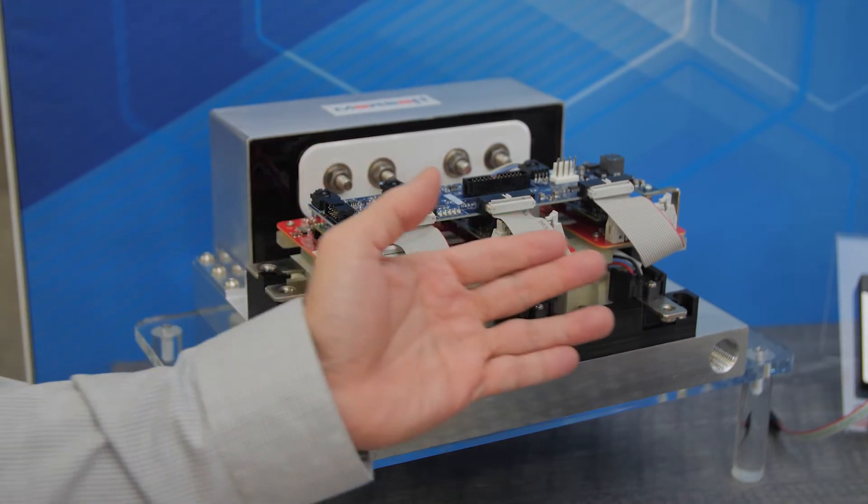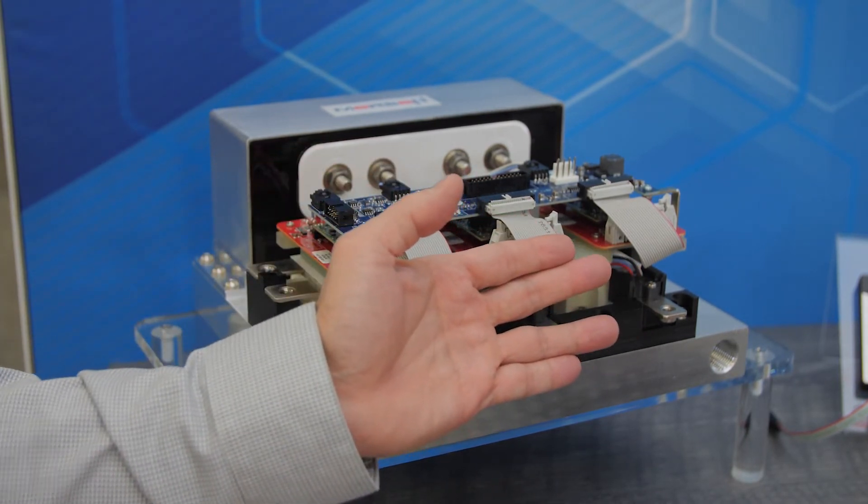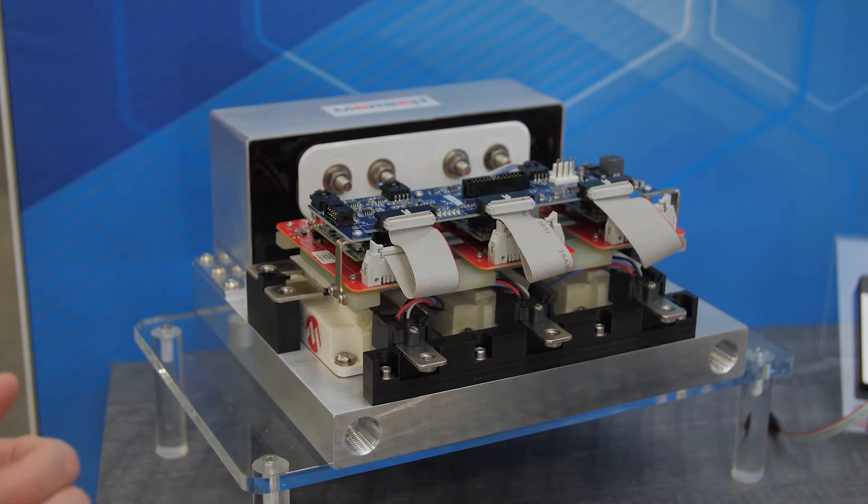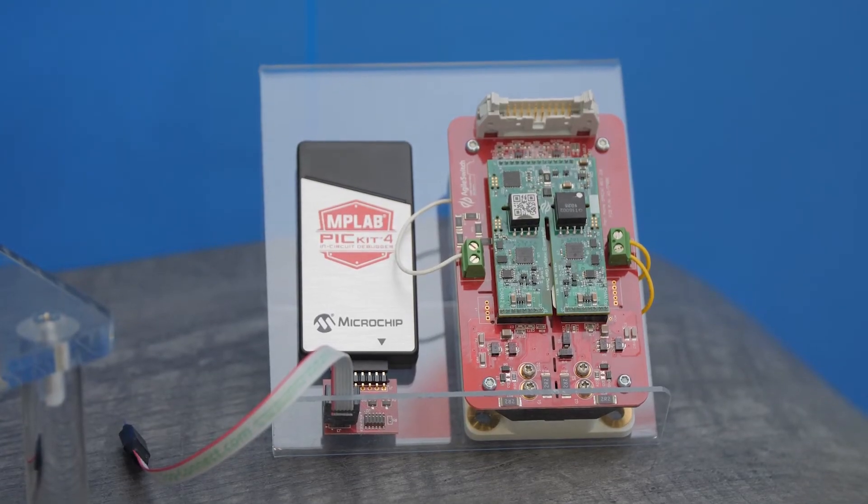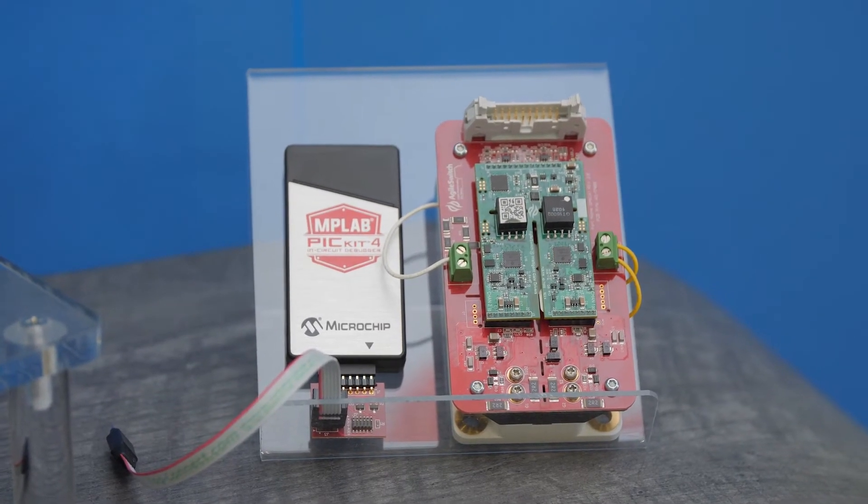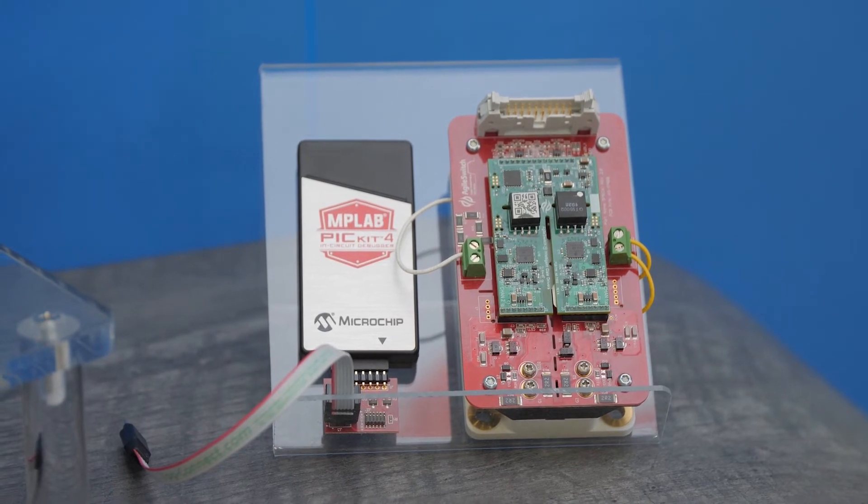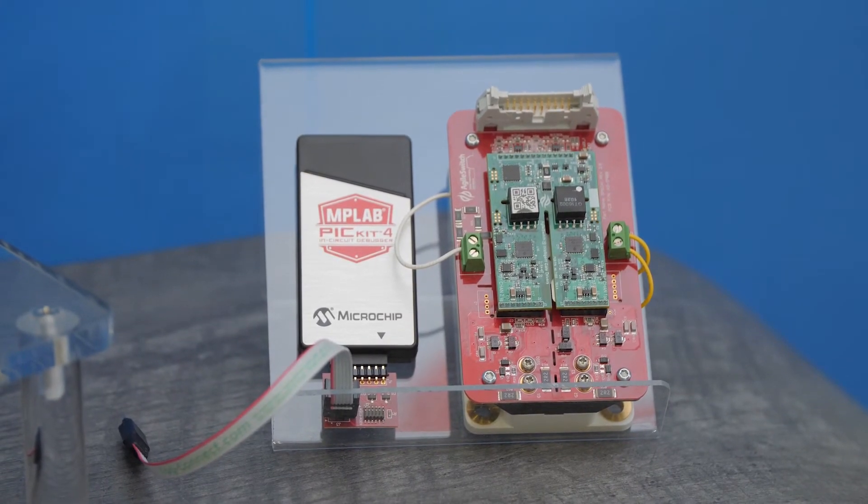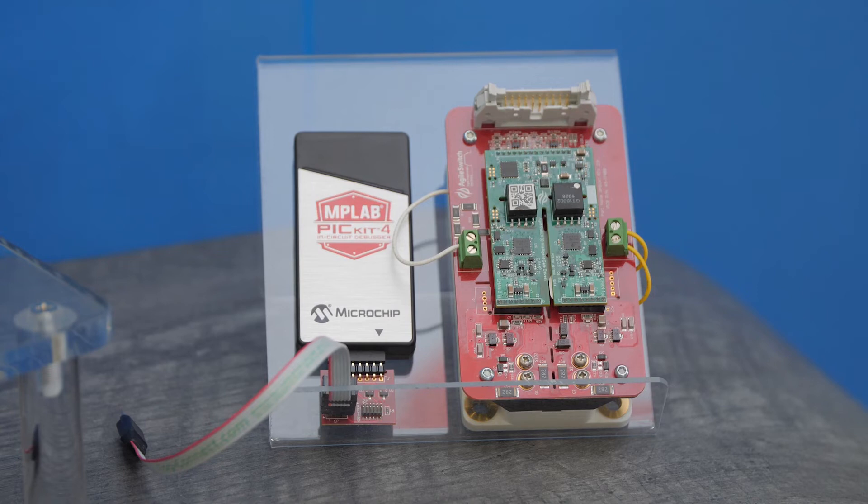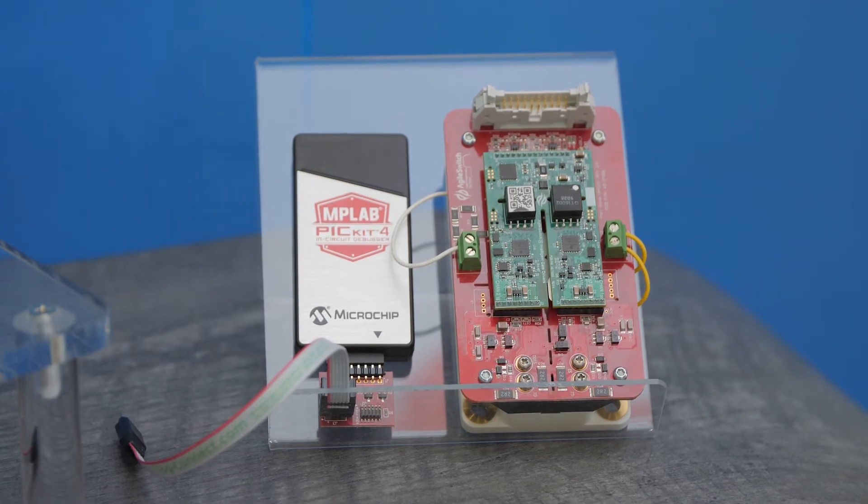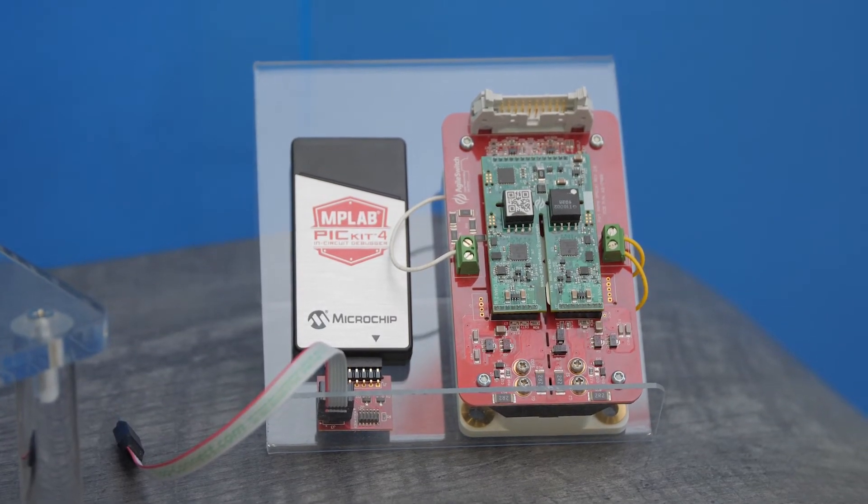And what you can see over here to the right is an example of our programming kit. This allows you to configure the gate driver to get the optimal level of performance in terms of EMI reduction, voltage overshoot, efficiency, without having to change gate resistors or change boards. It's all software-based.